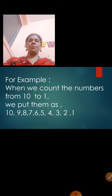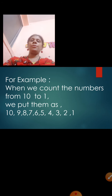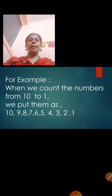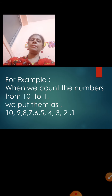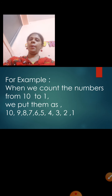For example, when we count the numbers from 10, we do backward counting. 10 is the largest number, so: 10, 9, 8, 7, 6, 5, 4, 3, 2, 1. We start from the bigger number 10 and go down to 1.